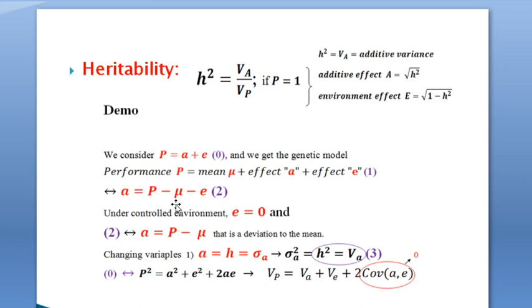By considering from here that small a equals P minus μ minus e, we realize that the performance minus the mean of the group is a deviation, and what is used to represent the deviation is the standard deviation, so small a is a standard deviation. Here, if the environment is being controlled—that is, all the groups are bred under the same environmental condition—therefore the effect of the environment is equal to zero. From this consideration, we have a as the deviation of the mean, and by changing the variable as we just defined, we'll find that small a equals the standard deviation of the additive effect and equals h. Therefore, the square of the standard deviation is a variance, hence we have the formula of the variance.